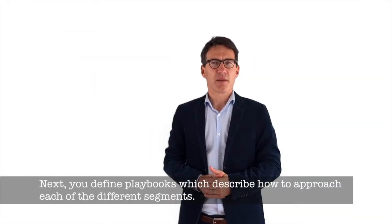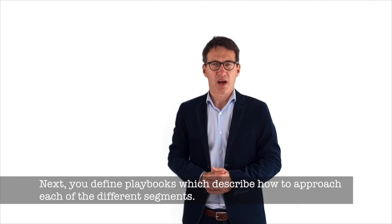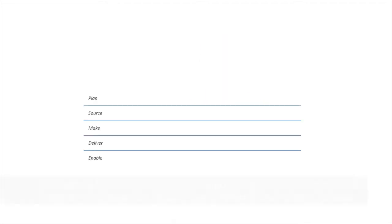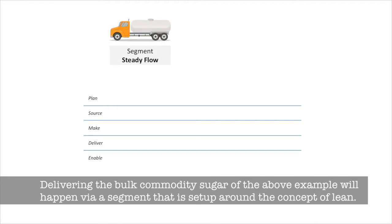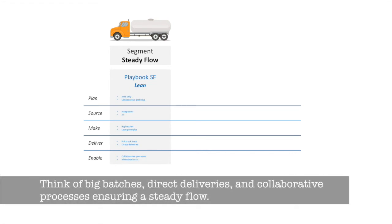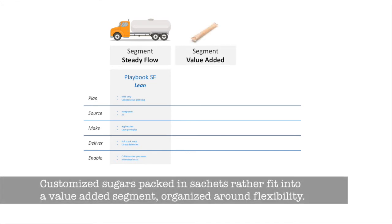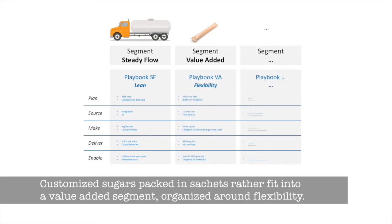Next, we define playbooks, which describe how to approach each of the different segments. Delivering the bulk commodity sugar of the above example will happen via a segment that is set up around the concept of lean — think of big batches, direct deliveries, and collaborative processes ensuring a steady flow. Customized sugars packed in smaller shares rather fit into a value-added segment, organized around flexibility.